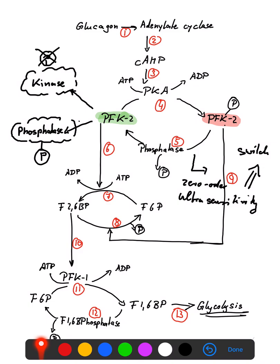We see a very similar mechanism of zero-order ultrasensitivity with PFK1. PFK1 phosphorylates the substrate, whereas fructose-1,6-bisphosphatase dephosphorylates it. Again, we have a zero-order ultrasensitivity switch. If PFK1 is activated, everything moves toward fructose-1,6-bisphosphate and glycolysis proceeds. If PFK1 is not activated, we go back to fructose-6-phosphate and no glycolysis happens.